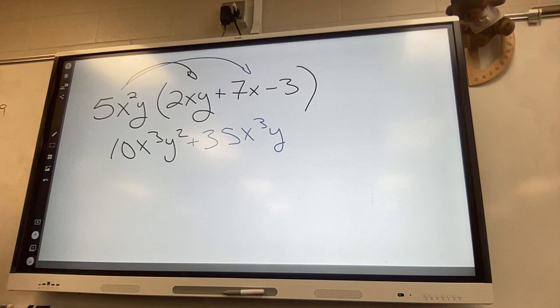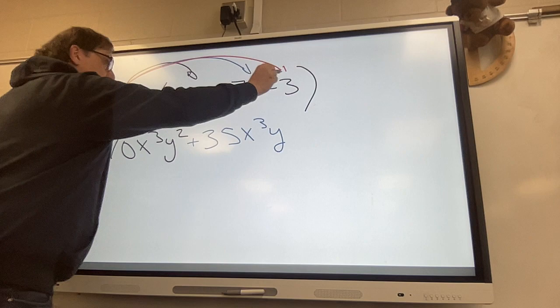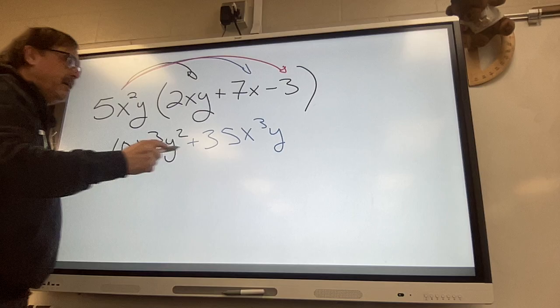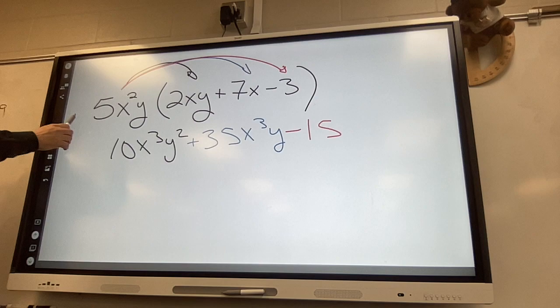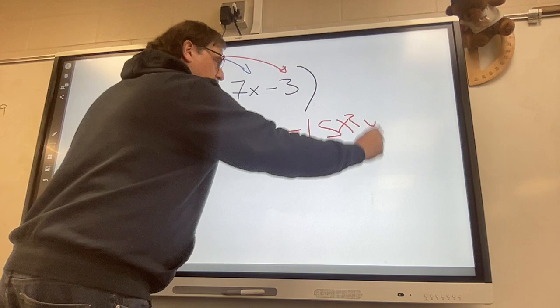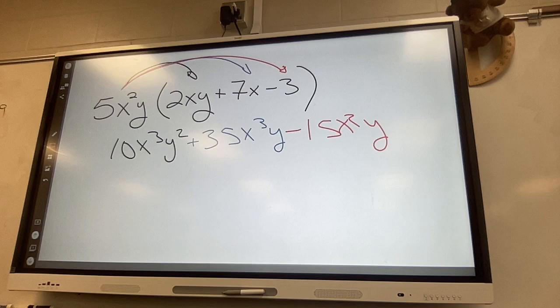And finally you don't have to draw this arrow but you take everything outside times the end and I've got regular five times negative three positive times negative negative and then x squared just comes along and y squared or y just comes along. We combine like terms the x's the y's the exponents have to be identical.